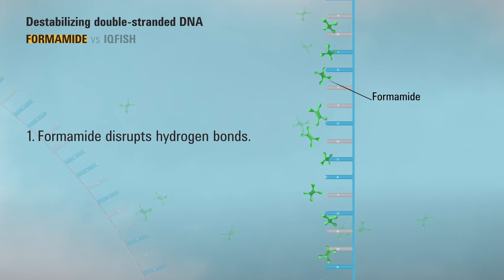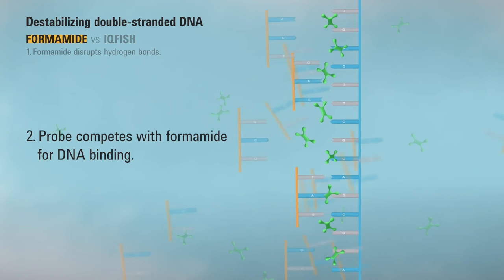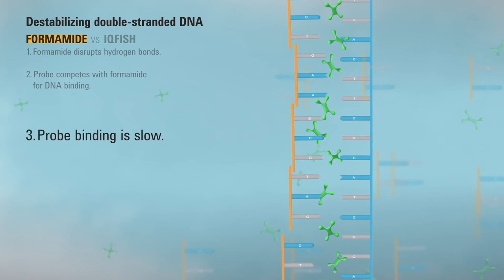However, formamide ends up competing with the fish probes for DNA binding, making probe binding slow.